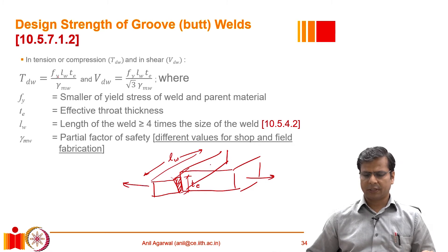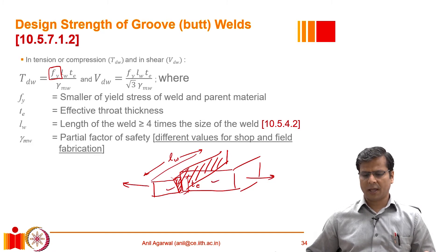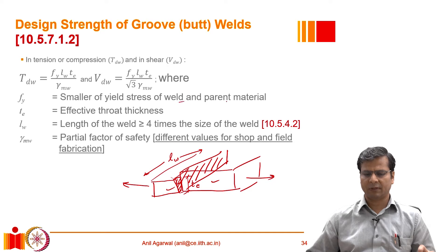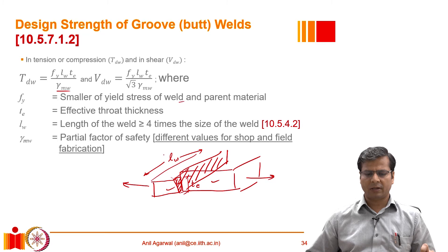The entire cross-section subjected to tension is given by LW multiplied by Te. This is multiplied by Fy, where Fy is the minimum yield strength of the parent material and the weld material, because they act in series. We then divide by γMW, where γMW is the partial safety factor for welded joints.